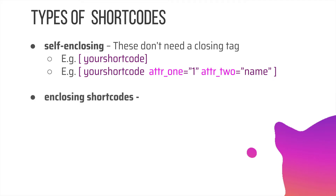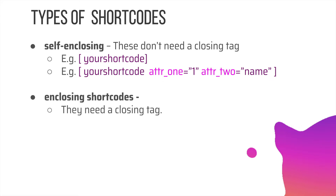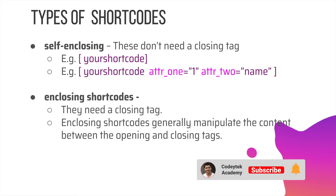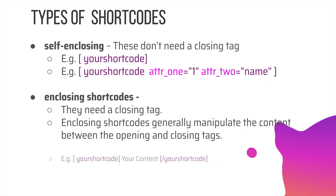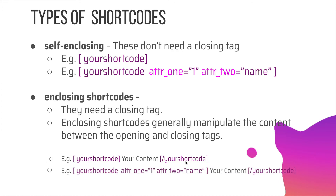Then there are enclosing shortcodes, which have a closing tag. Their purpose is to generally manipulate the content between the opening and closing tags. So you have your opening shortcode, your content in the middle, and then the closing shortcode tag. This is also how it looks with attributes added to them.